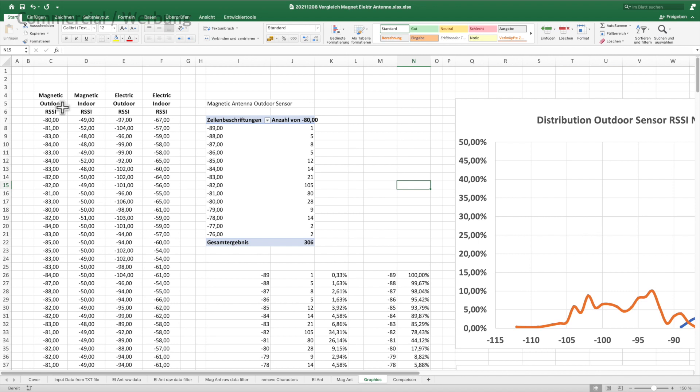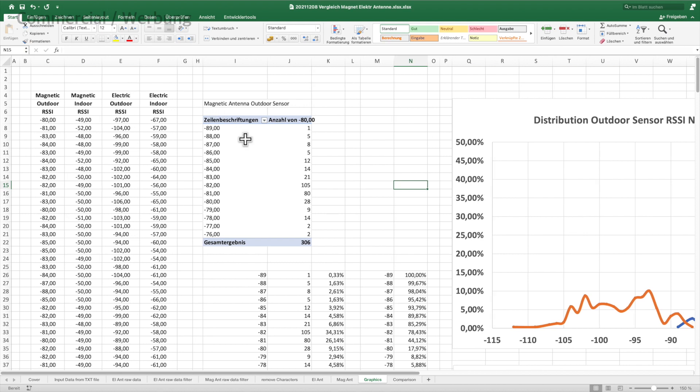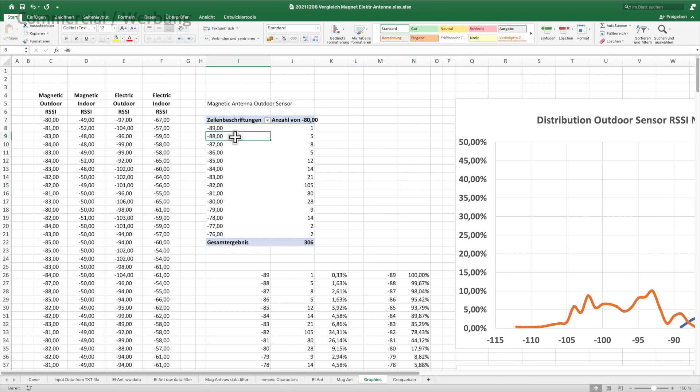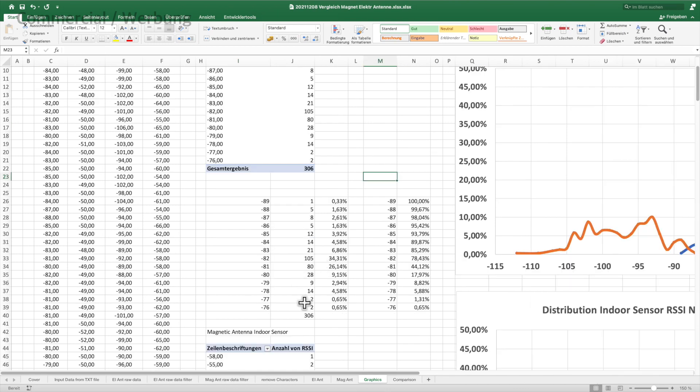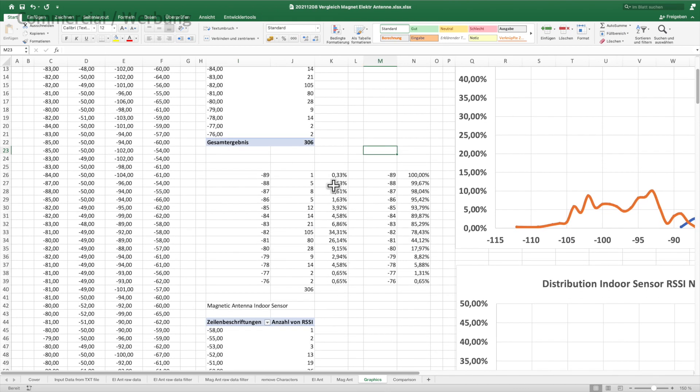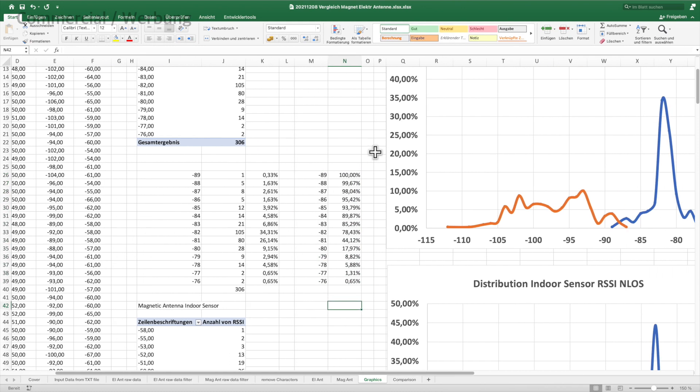Since the RSSI values are integer, we can make our life easy to calculate the distribution density and the probability. We insert a pivot table that is just counting the number of measurements that we get for each value. This gives us directly the distribution density that we want to show as a percentage.